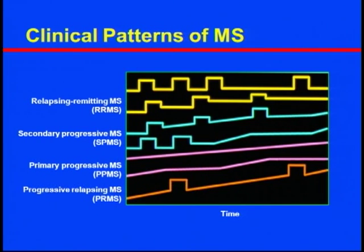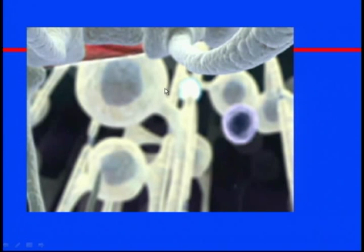Let's skip the movie, sorry about that. Basically it demonstrates the process starting in the periphery, where immune cells get over-reactivated, cross the blood-brain barrier, and target CNS tissues — neurons and oligodendrocytes.